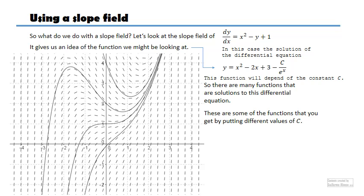You might get asked to draw a few of these, or to interpret whether they are solutions to the differential equation based on whether they are following the slope field or not. The important thing you must understand is these lines never cross. In no situation will the different solutions of the differential equation have an intersection point. They may be converging but at no point will they actually cross — that's something you should know. When you draw them, make sure they don't cross.